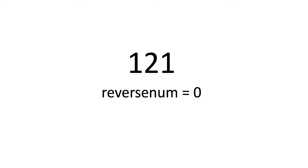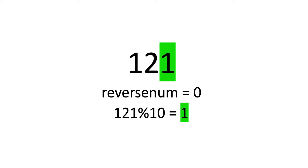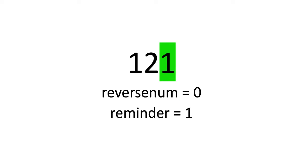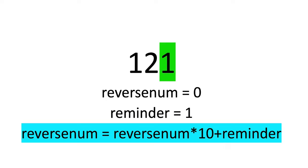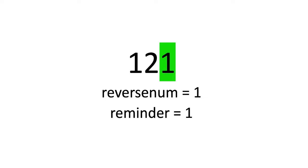For example, let's assume our number is 121 and we initialize reverse number as 0. To reverse the number we find the last digit using mod: 121 mod 10 equals 1. The mod function returns the remainder, so we assign remainder as 1. Now we use the formula: reverse number equals reverse number multiplied by 10 plus remainder. So 0 multiplied by 10 plus 1 equals 1. We now have the last digit 1 in the reverse number.